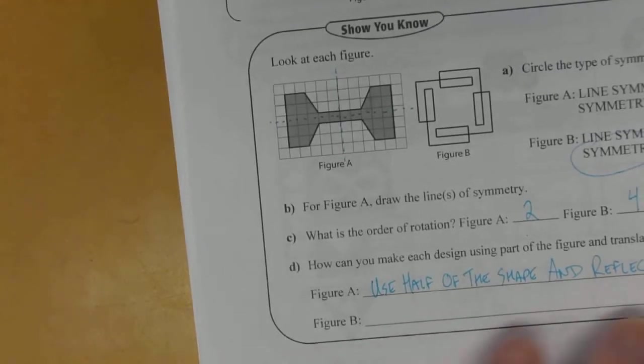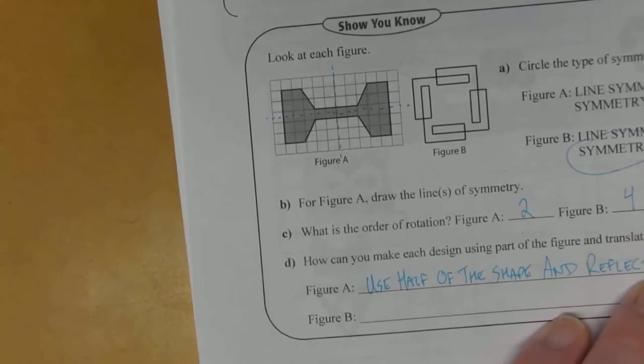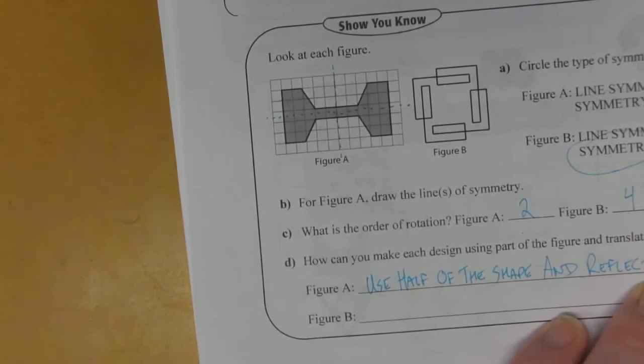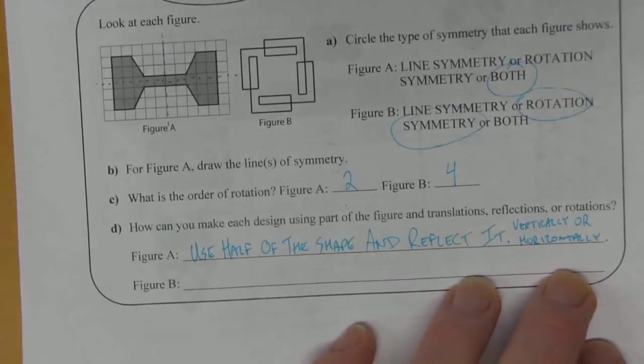Use half of the shape and reflect it vertically. Actually, I should have this in here or horizontally. Obliquely won't work. Obliquely will not work for figure A.